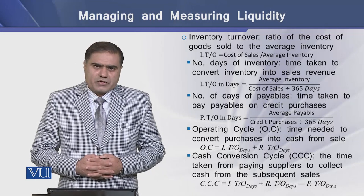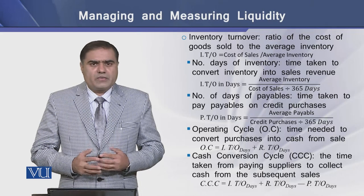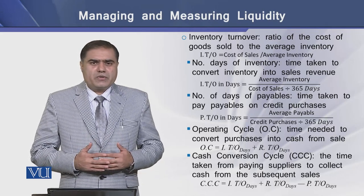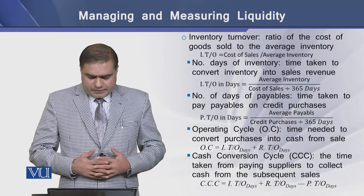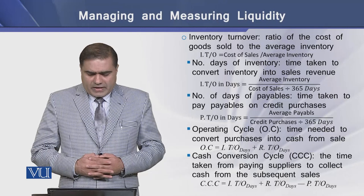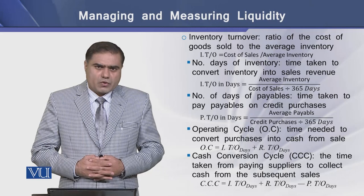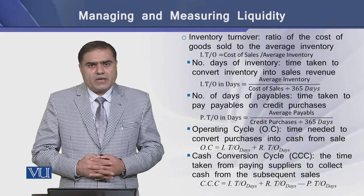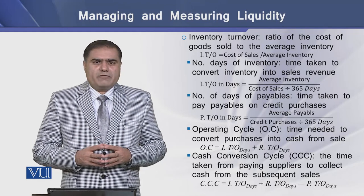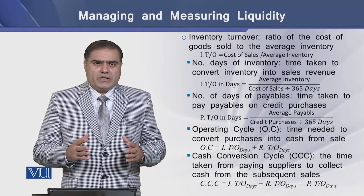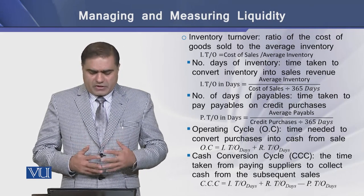The inventory turnover ratio tells how quickly the inventory of a firm replaces its godown, and this ratio is generally believed to be as low as possible. The number of days inventory is the time taken by the inventory to replace the godown, and it depends upon the inventory turnover ratio. If the inventory turnover ratio is higher, the average time taken by the inventory to replace the godown will be lower. So there is an inverse relationship between these two ratios.